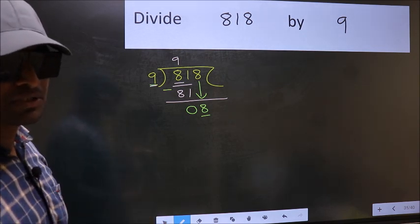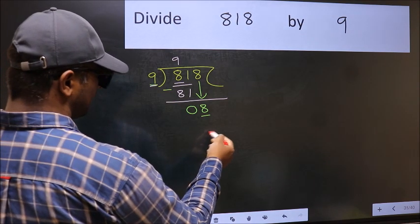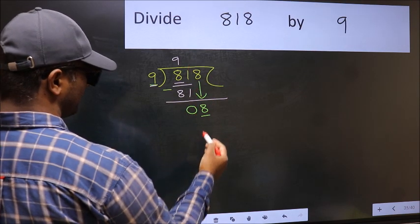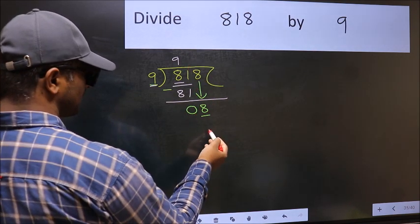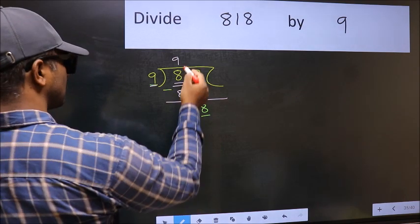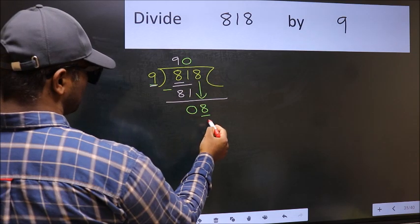Instead, what you should think of doing is, which number should we take here? If I take 1, we will get 9. But 9 is larger than 8. So what we should do is, we should take 0. So 9 into 0, 0.